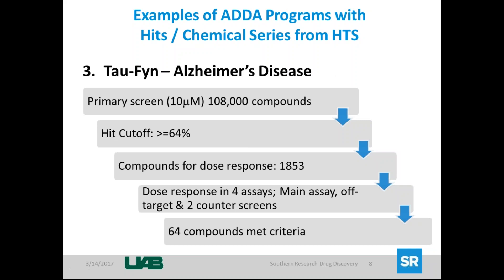Another program is the tau program, where the primary screen was done on 100,000 compounds with a cutoff of 64% inhibition. We did compound dose-response on almost 2,000 compounds, followed by more dose-response in four different assays. The end result was 64 compounds that met the criteria. Further evaluation with our biologists led us to 10 structurally diverse compounds that we're now synthesizing based on the biological activity and drug-like properties.